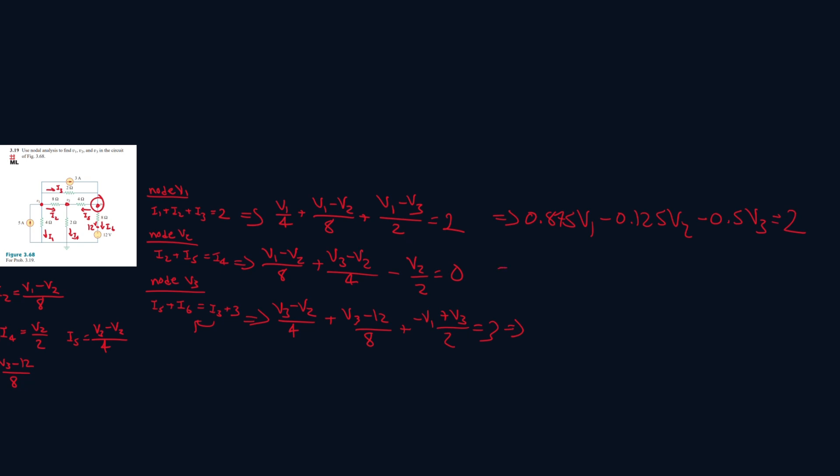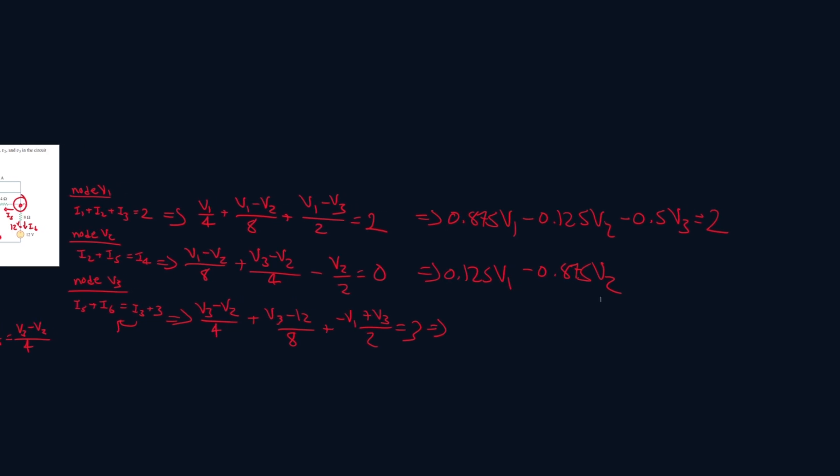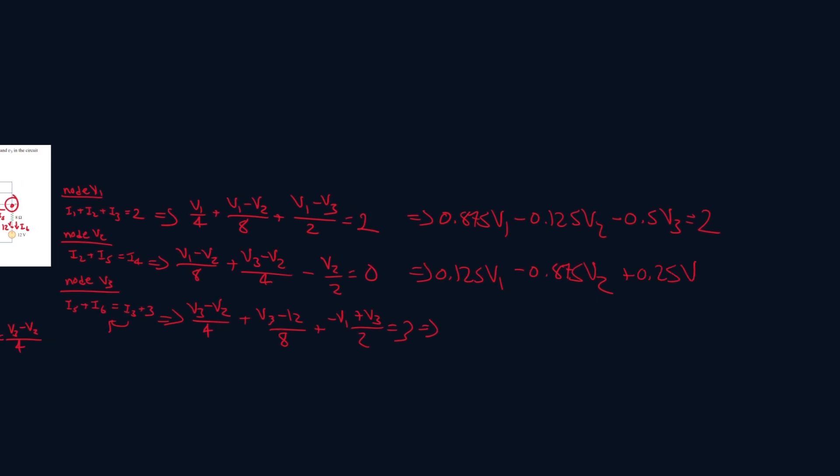Now we have V1 over 8, so that's 0.125 V1, minus V2 over 8, minus V2 over 4, minus V2 over 2, which gives me minus 0.875 V2. We have V3 over 4, that's just 0.25 V3, and this will be equal to 0.